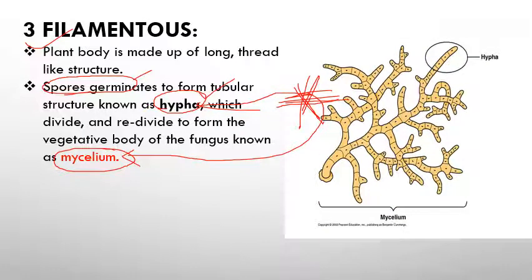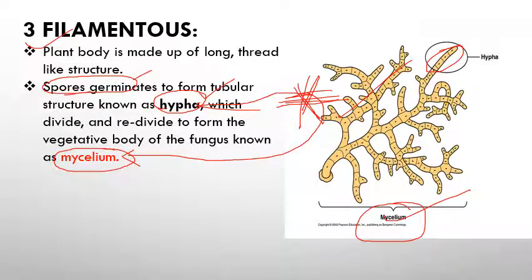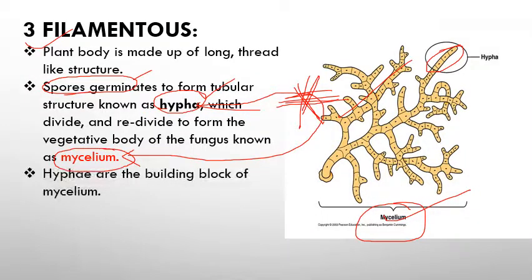In this picture we can see the filamentous structure — this is the hypha. When hyphae get mixed or intermingled we call it mycelium, which is visible here. A compact, complex mass of hyphae is known as mycelium. We can say hyphae are the building blocks of mycelia.